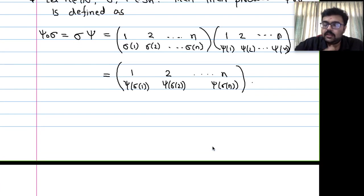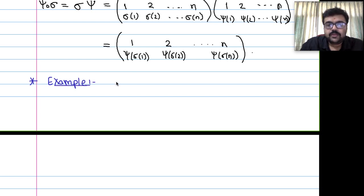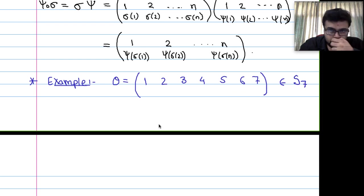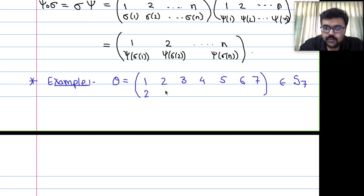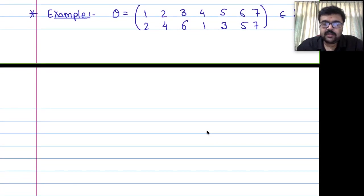Before giving formal definitions, let us consider an example in S7. The permutation theta we consider is: 1 goes to 2, 2 goes to 4, 4 goes to 1, 3 goes to 6, 6 goes to 5, 5 goes to 3, and 7 goes to 7.